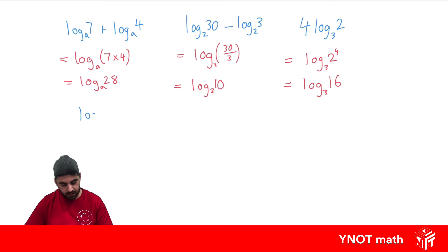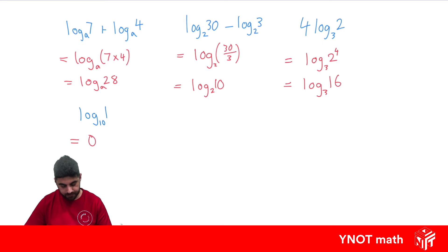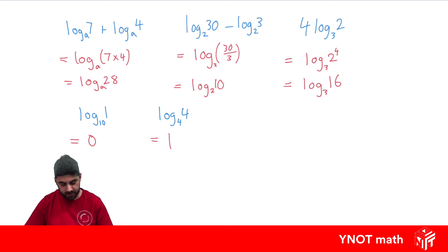What about log 1 base 10? The log of 1 is just 0. What about log 4 base 4? If we have a log of a number with the same base, that's just going to equal 1.